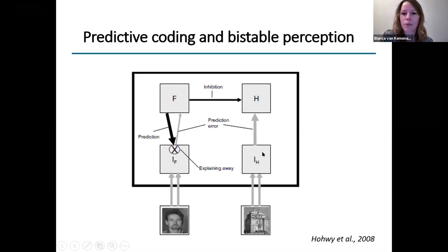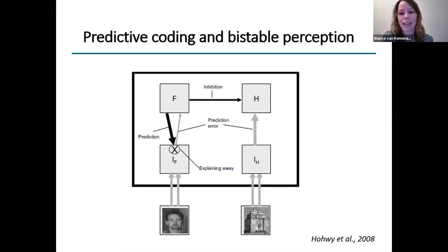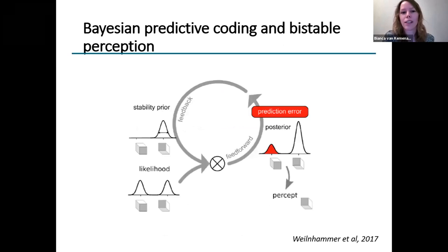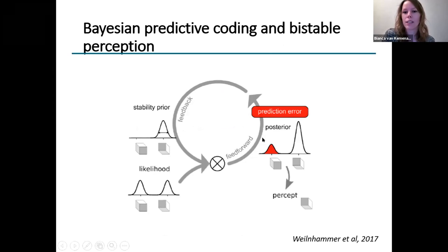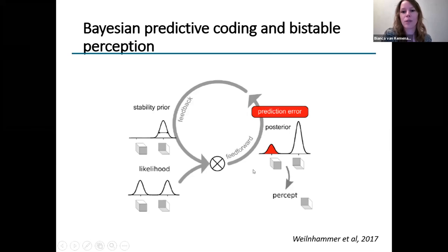In contrast, the prediction error elicited by the suppressed stimulus is getting larger and larger. Over time, this might tip the balance and favor the hypothesis that the sensory input is actually caused by the house. Or in a more predictive coding, Bayesian perspective: if we have a bistable stimulus like the Necker cube, both interpretations have equal likelihood, but we might have a certain prior — a belief that the input is likely caused by the second configuration. These combine to create a posterior distribution that favors the second configuration. But prediction errors keep being fed back into our system, shaping and updating our beliefs in case we're wrong. So this increasing prediction error might then change our prior. In other words, predictions really seem to play a huge role in bistable perception.